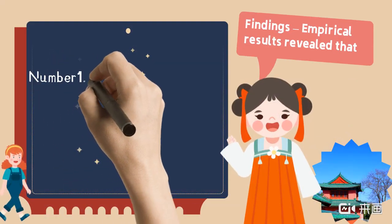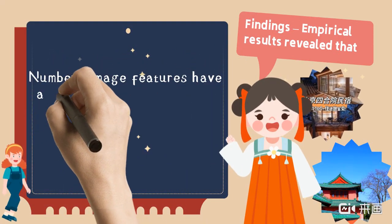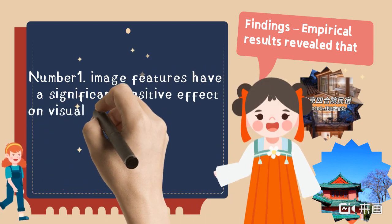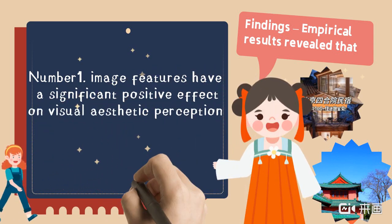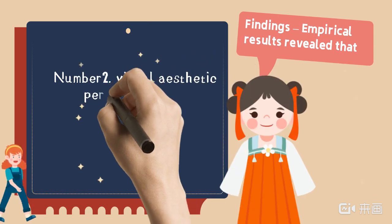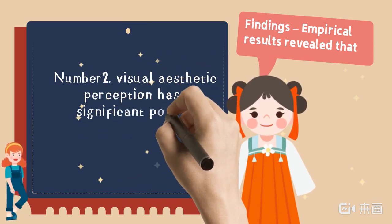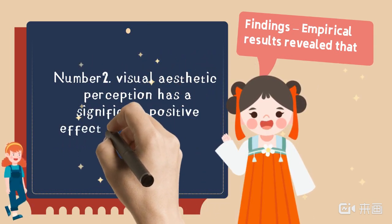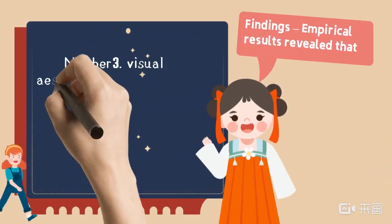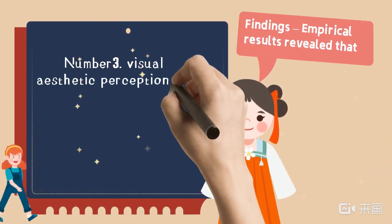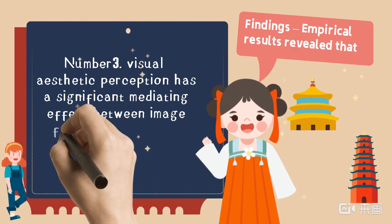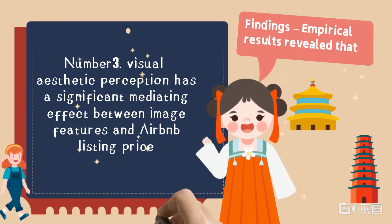Findings and empirical results revealed that: Number 1, image features have a significant positive effect on visual aesthetic perception. Number 2, visual aesthetic perception has a significant positive effect on Airbnb listing price. Number 3, visual aesthetic perception has a significant mediating effect between image features and Airbnb listing price.